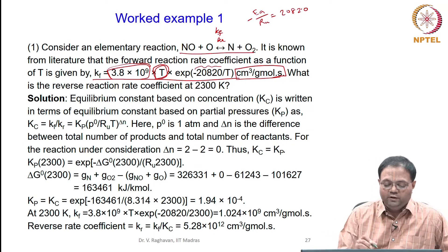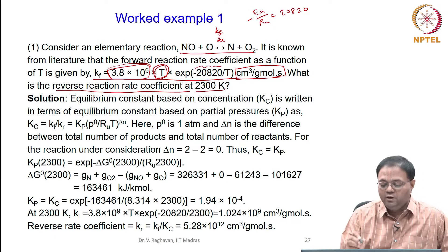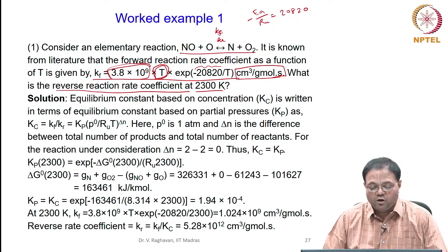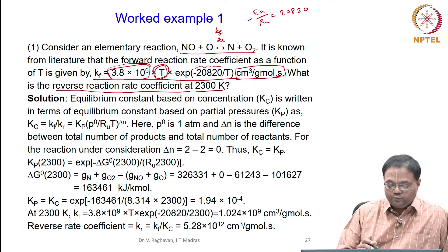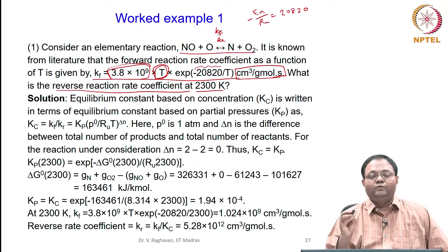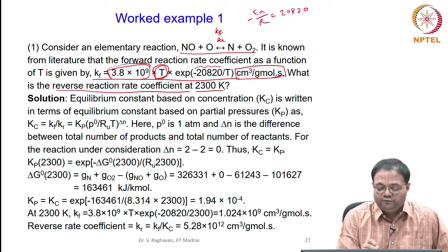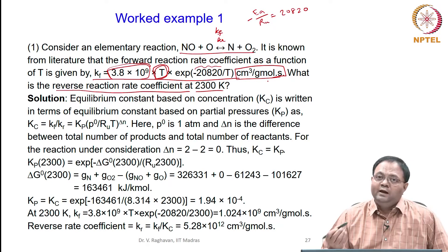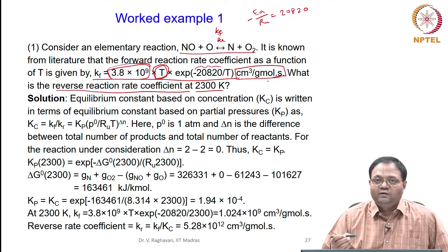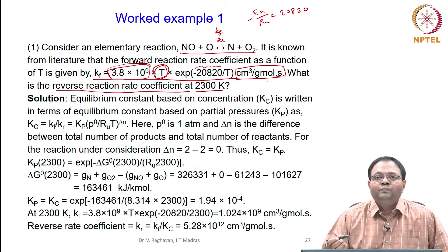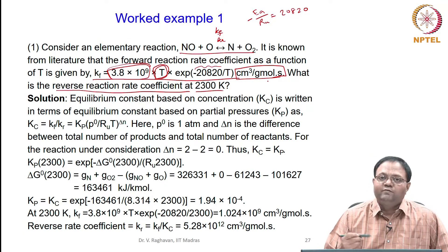The question asked is: what is the reverse reaction rate coefficient at a temperature of 2300 Kelvin? The forward reaction rate is given; we want to find the reverse reaction rate. Since directly measured Kr values have high uncertainties (around 40%), we will implement a thermodynamic-based approach to calculate the reverse reaction.